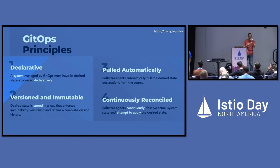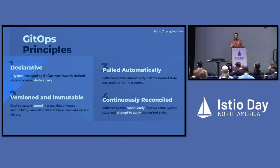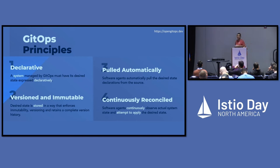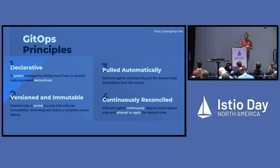Number three: pulled automatically. The distinction between push and pull — we're talking about the declarations themselves, i.e., the YAML, needing to be pulled into the system. The reason we're sticklers on that is to differentiate it from an event-based workflow or webhooks. Not to say you won't be using webhooks in your GitOps workflow — you absolutely will — it's just that using solely webhooks isn't GitOps. And number four: continuously reconciled. Software agents — the two most popular being Argo CD and Flux — continuously observe the system and attempt to reconcile the running state with the desired state.